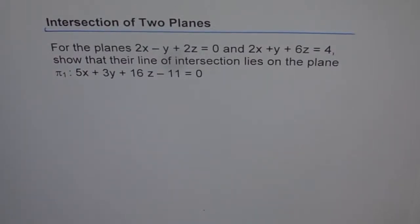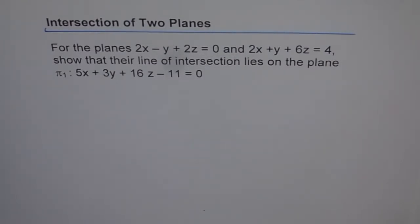Intersection of two planes. For the planes 2x minus y plus 2z equals to 0 and 2x plus y plus 6z equals to 4, show that their line of intersection lies on the plane pi 1: 5x plus 3y plus 16z minus 11 equals to 0.